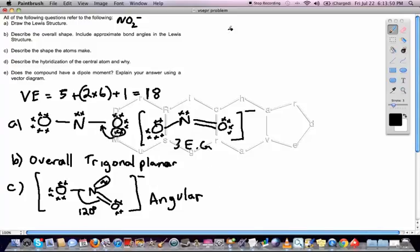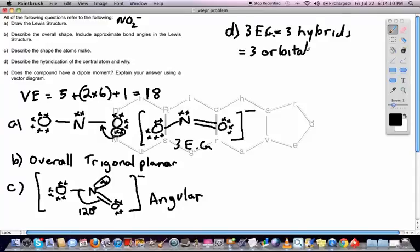Alright, so now we can go ahead and do the hybridization. Now we've got three electron groups for the hybrids, which means we need three hybrids, and we need three orbitals to make those hybrids. That would be s plus p plus p, so the hybridization is going to be sp2. If you're not sure what all of this is, please go take a look at the hybridization mini-lecture for an explanation.